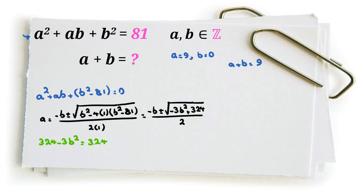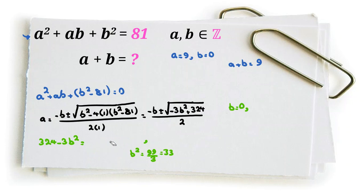Let's check the possible perfect squares. Starting with 18 squared equals 324, that gives b equals 0. Next, 15 squared equals 225. We compute b squared equals (324 minus 225) over 3 equals 99 over 3 equals 33, which is not a perfect square. Then we check 12 squared equals 144.